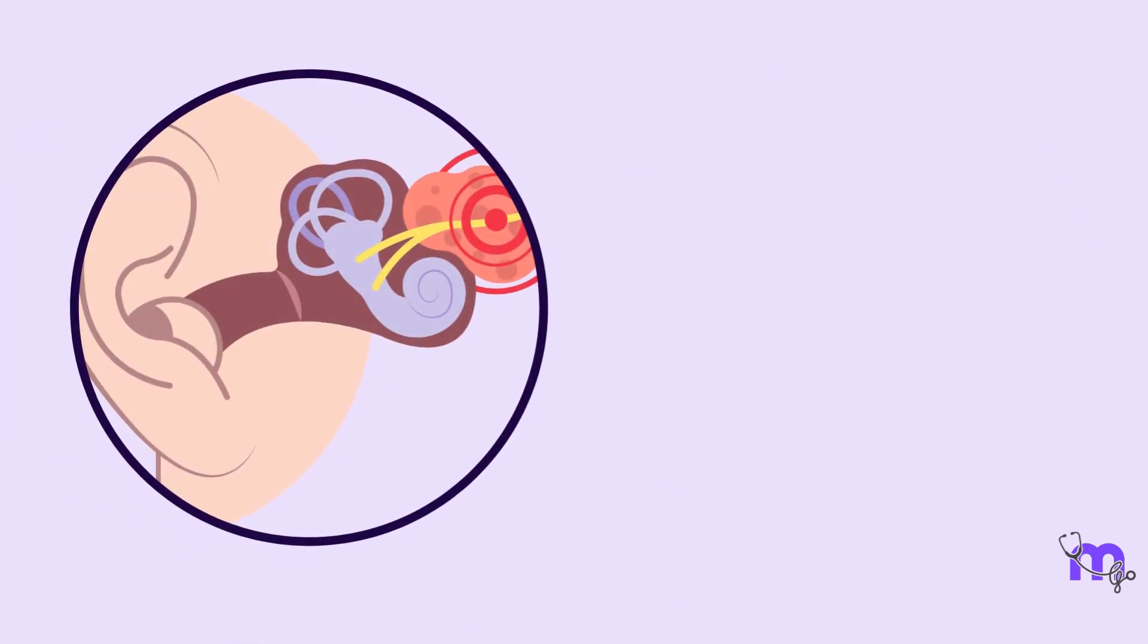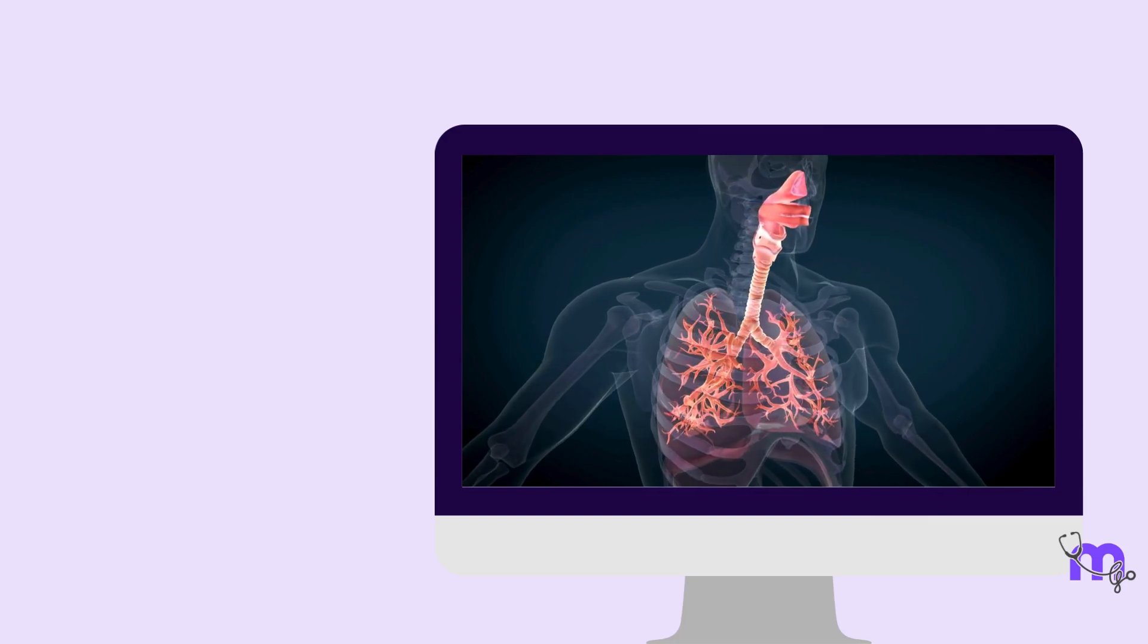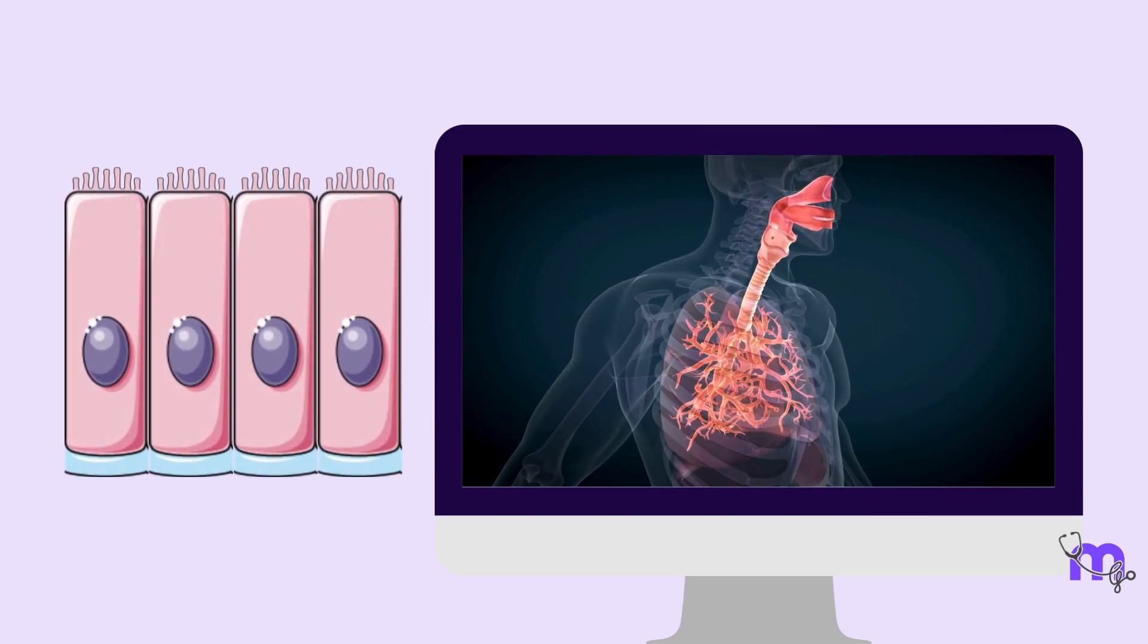The epithelium may be found in the auditory tubes, male urethra and ductus deferens. In the respiratory system, this type of epithelium is always ciliated.